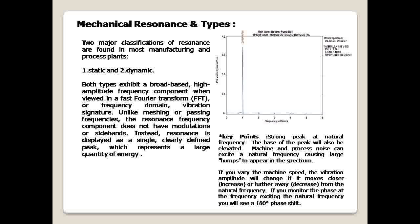Key points: there is a strong peak at the natural frequency, and the base of the peak will also be elevated. Machine and process noise can excite a natural frequency, causing large humps to appear in the spectrum. If you vary the machine speed, the vibration amplitude will change — increasing as it moves closer to the natural frequency and decreasing as it moves further away. If you monitor the phase at the frequency exciting the natural frequency, you will see a 180-degree phase shift.